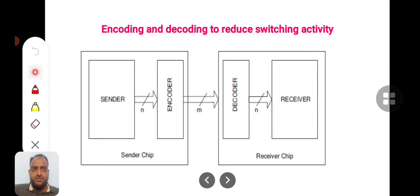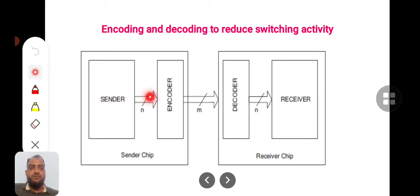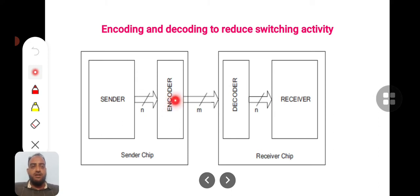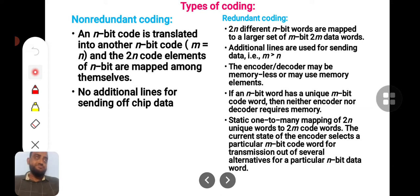The concept of bus encoding is demonstrated here. You can see the sender, who has n-bit wide data to be transmitted to the receiver. The receiver also needs the n-bit wide data. This data, after encoding, may remain n bits or it may be changed to m-bit data. The data is transmitted, and at the receiver section, the receiver chip will first decode the encoded — or morphed — data, then give it to the receiver in its original form. This is how data encoding and decoding is done.